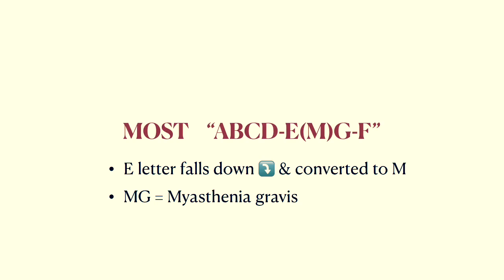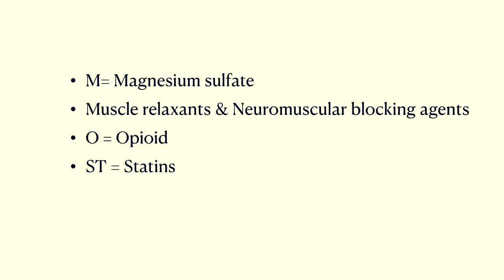The mnemonic is MOST ABCDEGF. If the letter 'F' later falls down, it looks like the letter 'T', making it 'MG' — for myasthenia gravis. M stands for magnesium sulfate, muscle relaxants, and neuromuscular blocking agents.